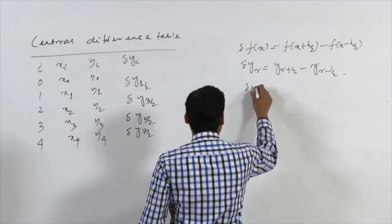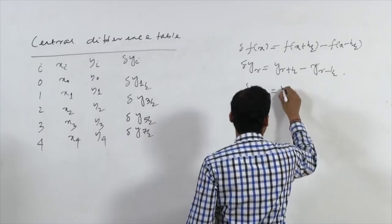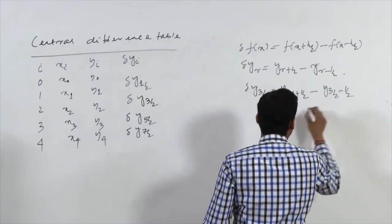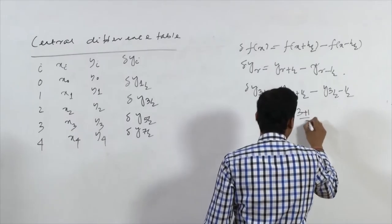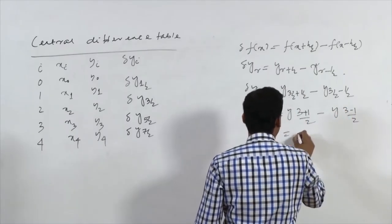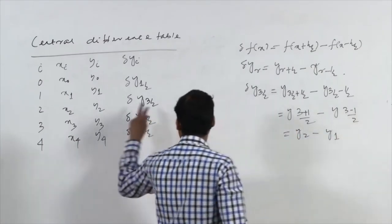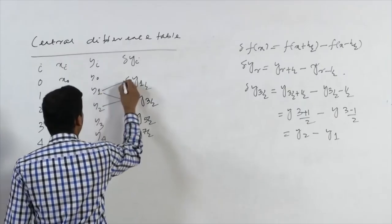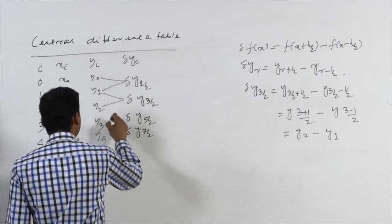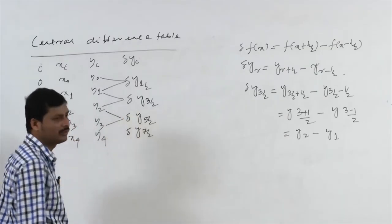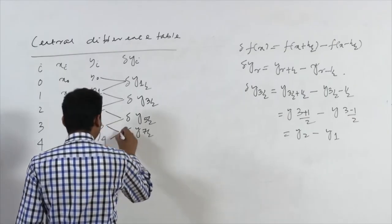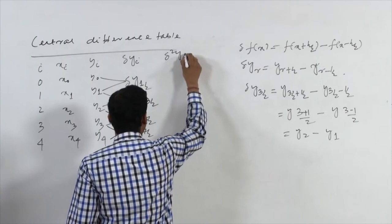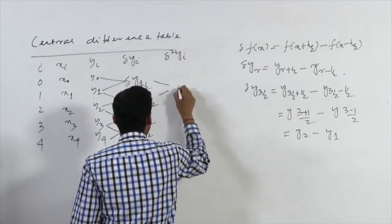Since delta y(3/2) can be written as y(3/2 + 1/2) minus y(3/2 − 1/2), that is y(2) minus y(1), so y2 minus y1 is written as delta y(3/2). Similarly y1 minus y0 is delta y(1/2), y3 minus y2 is delta y(5/2), and y4 minus y3 is delta y(7/2). Taking the difference of those two gives delta squared of yi, written as delta squared y1.